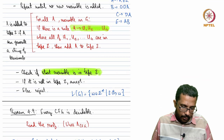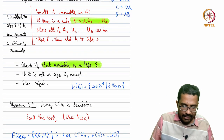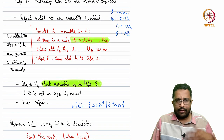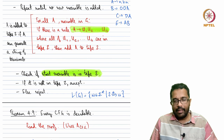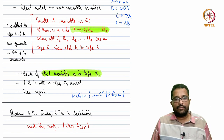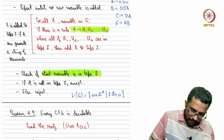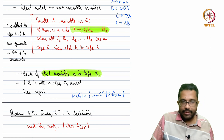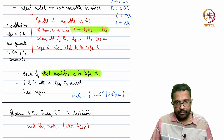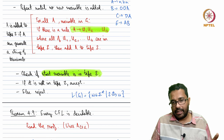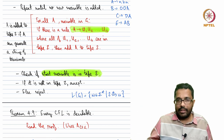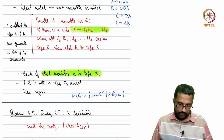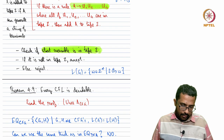The next is Theorem 4.9 — every context-free language is decidable. Given a context-free language and a string, you can always check whether the string is in the language or not. The proof is very similar to ACFG, or rather it uses ACFG.